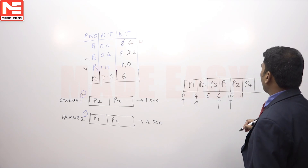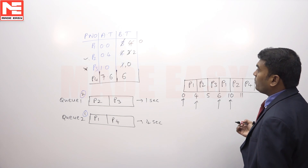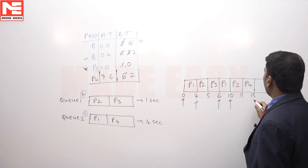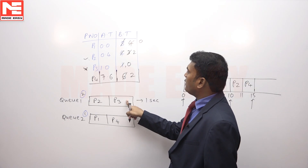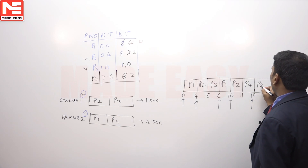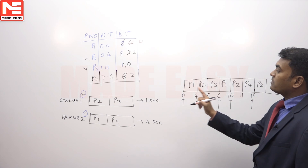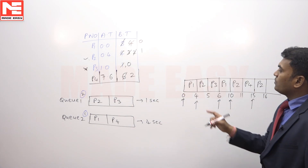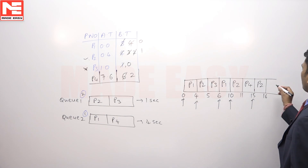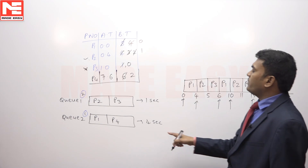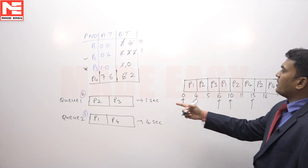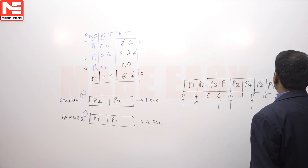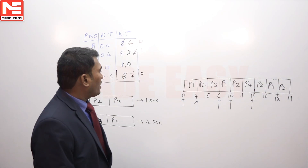We take P4 from Q2; it requires 6 units but we execute only 4 units, so time reaches 15 with 2 units remaining for P4. Next cycle: execute P2 from Q1 for 1 unit — time reaches 16, remaining = 1. Then P4 from Q2: it only needs 2 more units, so execute 2 units — time reaches 18, P4 completes. Finally, execute P2's last 1 unit — time reaches 19, P2 completes. All processes finish at time 19.